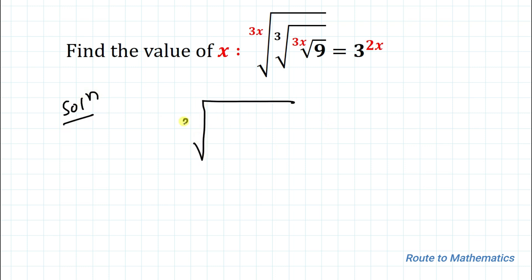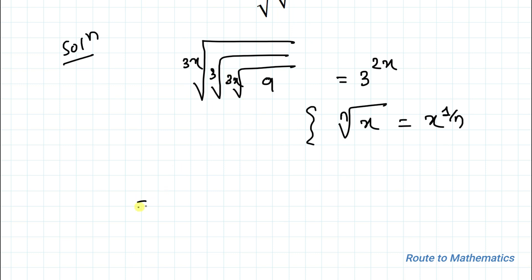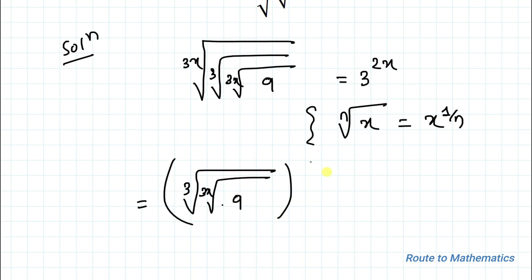So we have given: 3x-th root of ( square root of ( 3 times the 3x-th root of 9 ) ) equals 3 to the power 2x. We know an exponential rule that is the n-th root of x equals x to the power 1/n. So here we can write the 3x-th root as ( square root of ( 3x-th root of 9 ) ) to the power 1 by 3x, equals 3 to the power 2x.